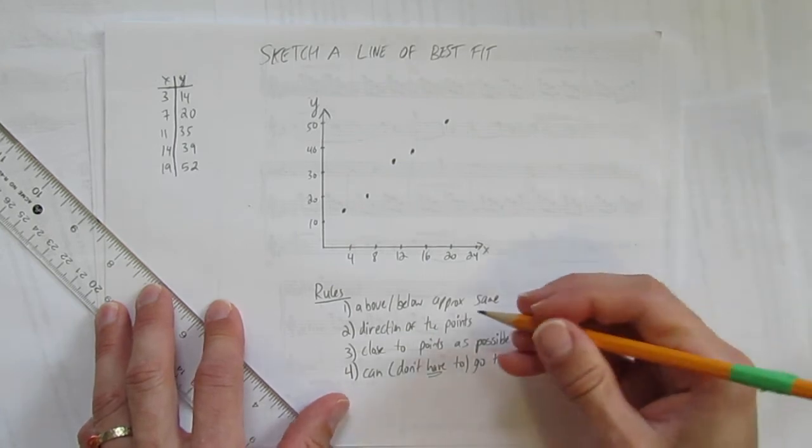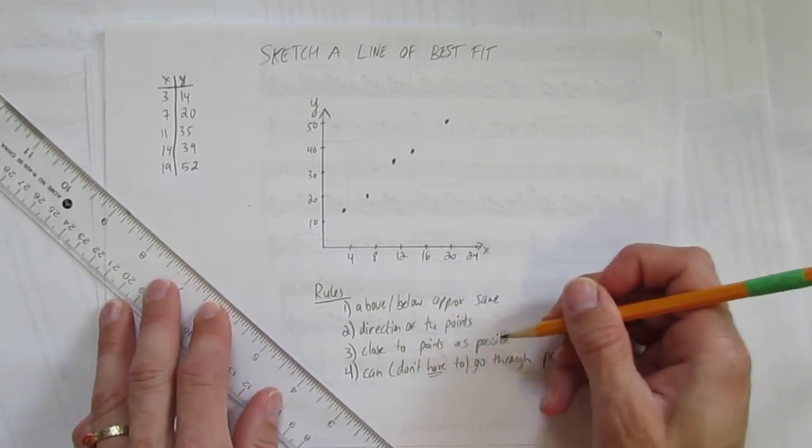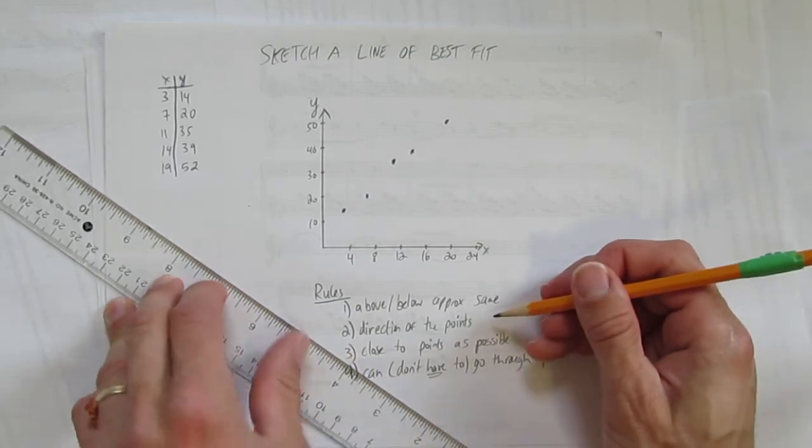So, same amount above and below, approximately, go in the direction of the points, as close to the points as possible, and you're allowed to, but you don't have to, go through the points.